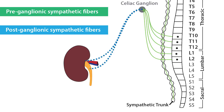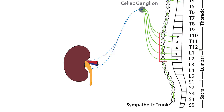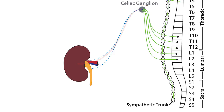The preganglionic fibers that innervate the kidneys exit the spinal column at the 10th, 11th, and 12th thoracic and the 1st and 2nd lumbar spinal nerve tracts. These preganglionic fibers then pass through the sympathetic trunk without making a synapse and converge into the celiac ganglion, where they form synapses with the postganglionic fibers, which innervate the renal arteries and ureters.